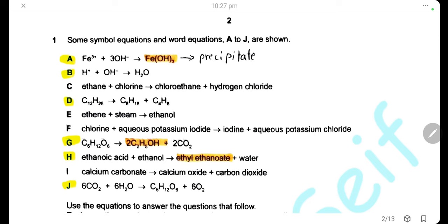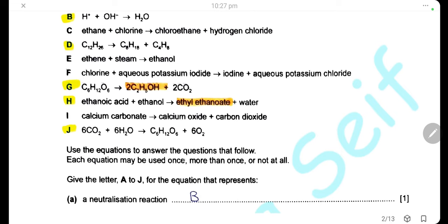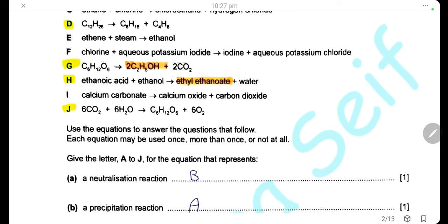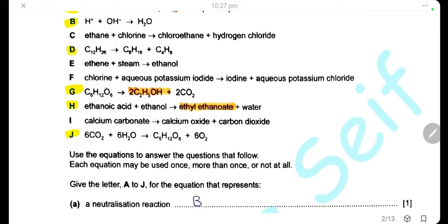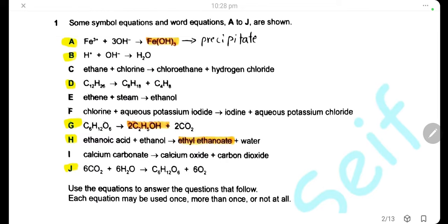Question 1. Some simple equations and word equations A to J are shown. Use these equations to answer the questions that follow. Each equation may be used once, more than once, or not at all. First: neutralization reaction. Neutralization is the reaction between acid and alkali, or a base, to form salt and water. So here we have equation B, where protons from the acid react with the hydroxide ion from the alkali to form water. So B is the equation for neutralization reaction.